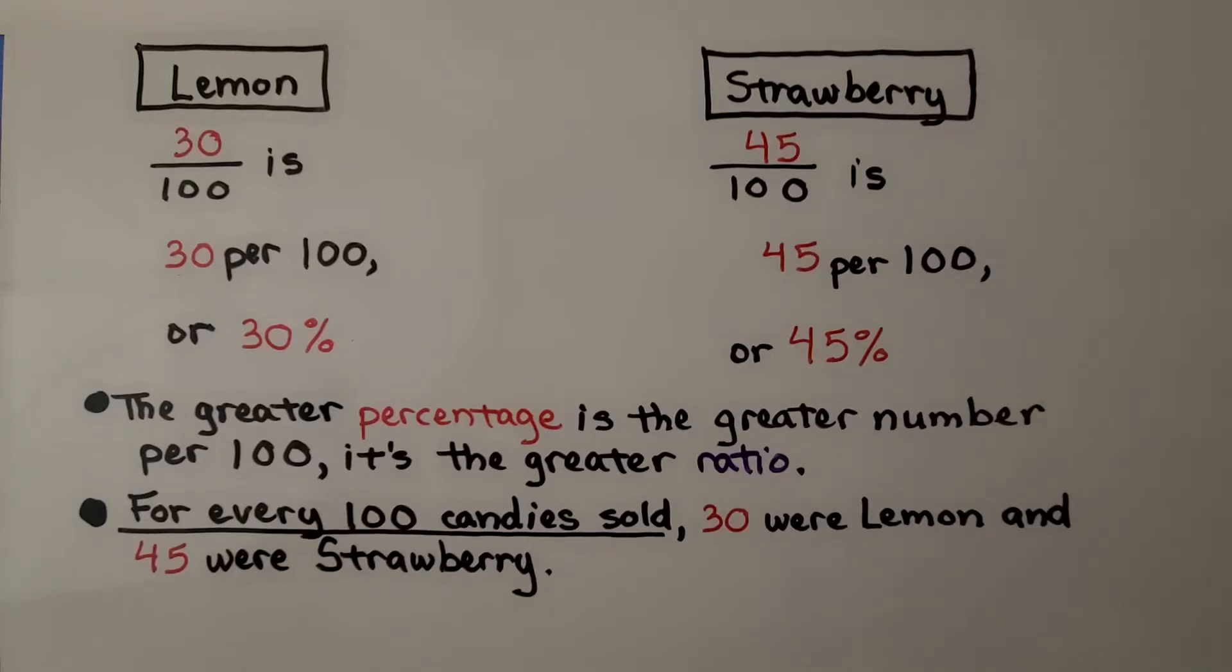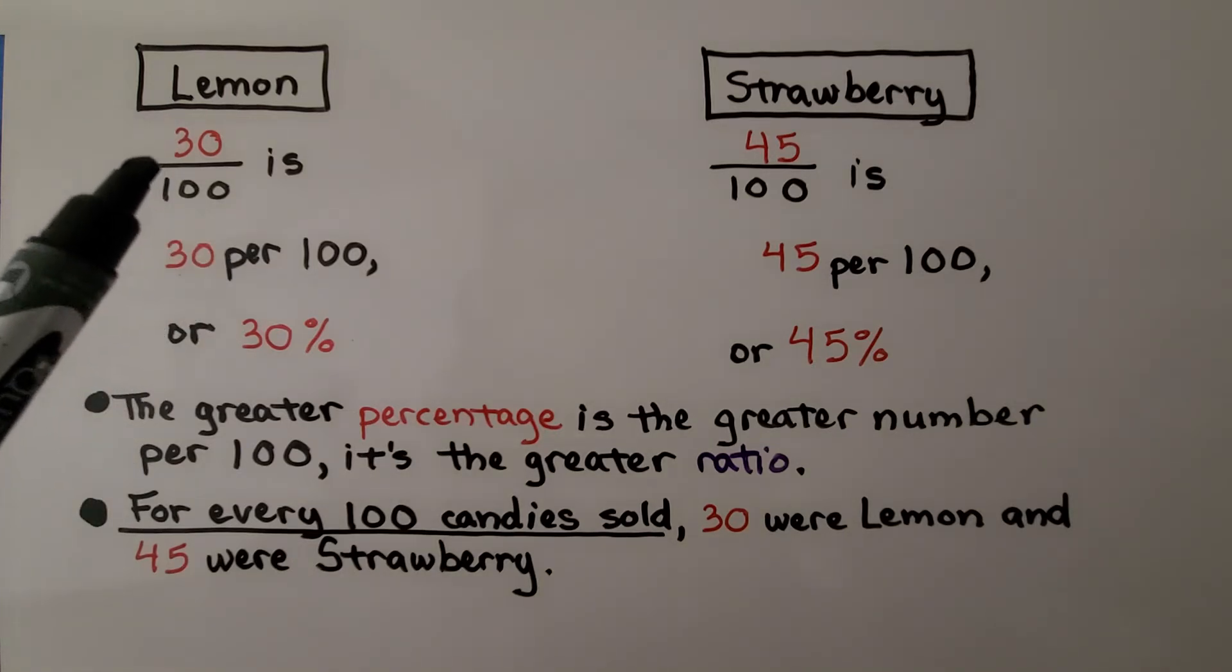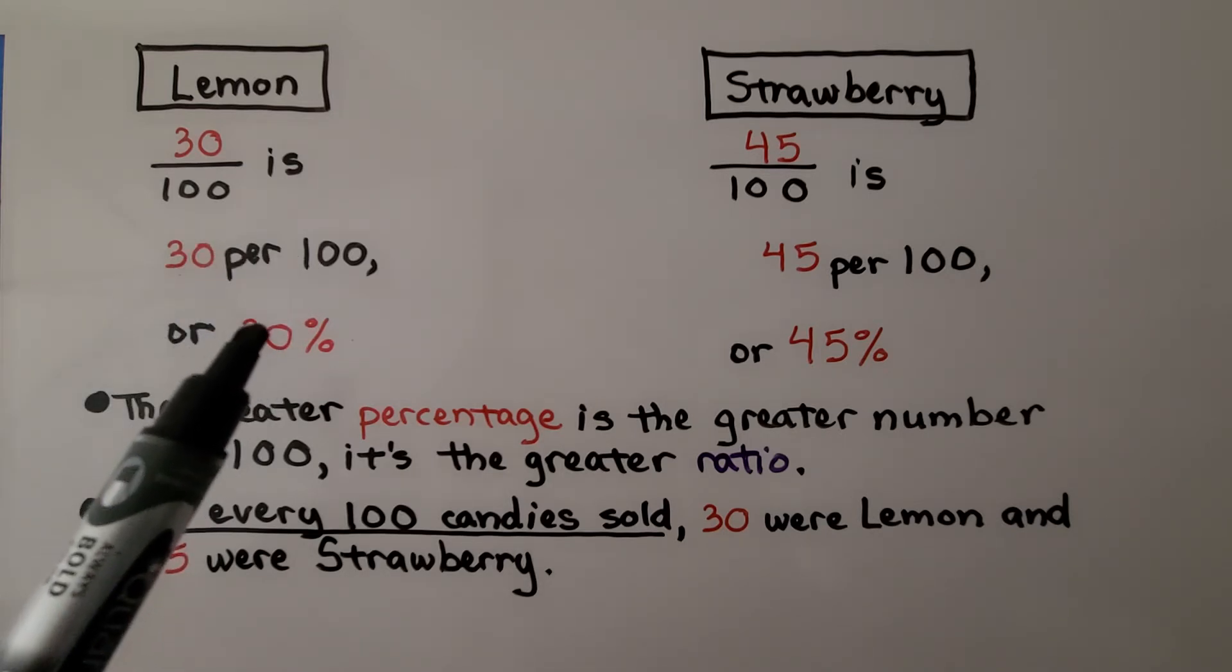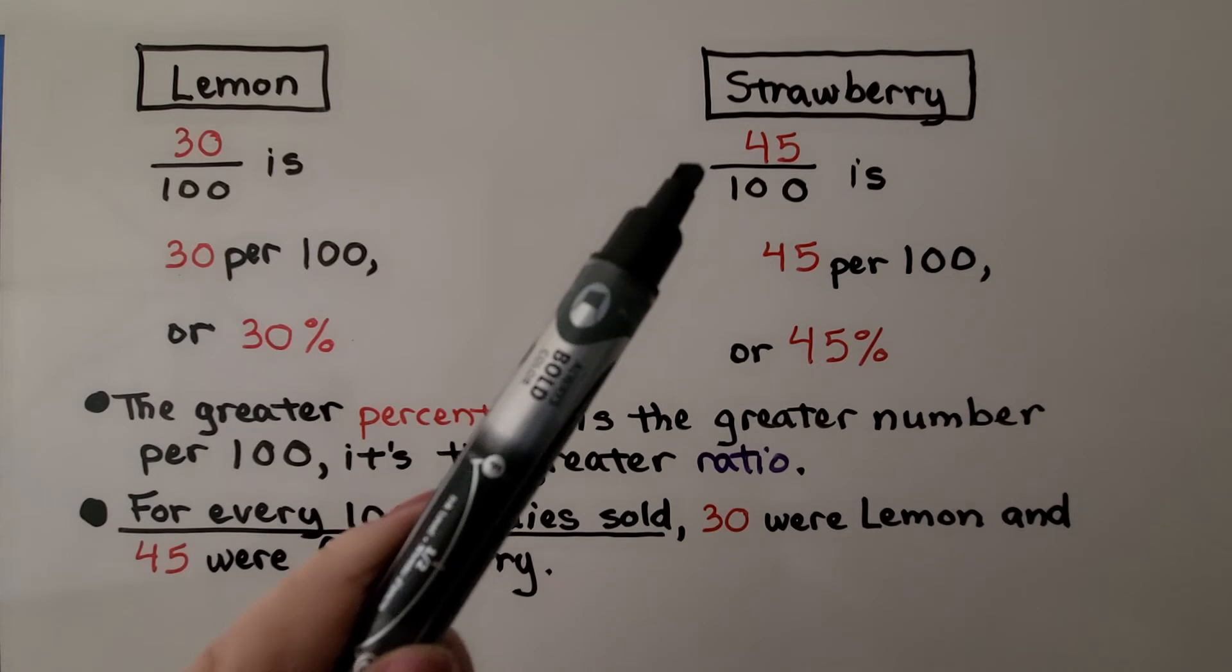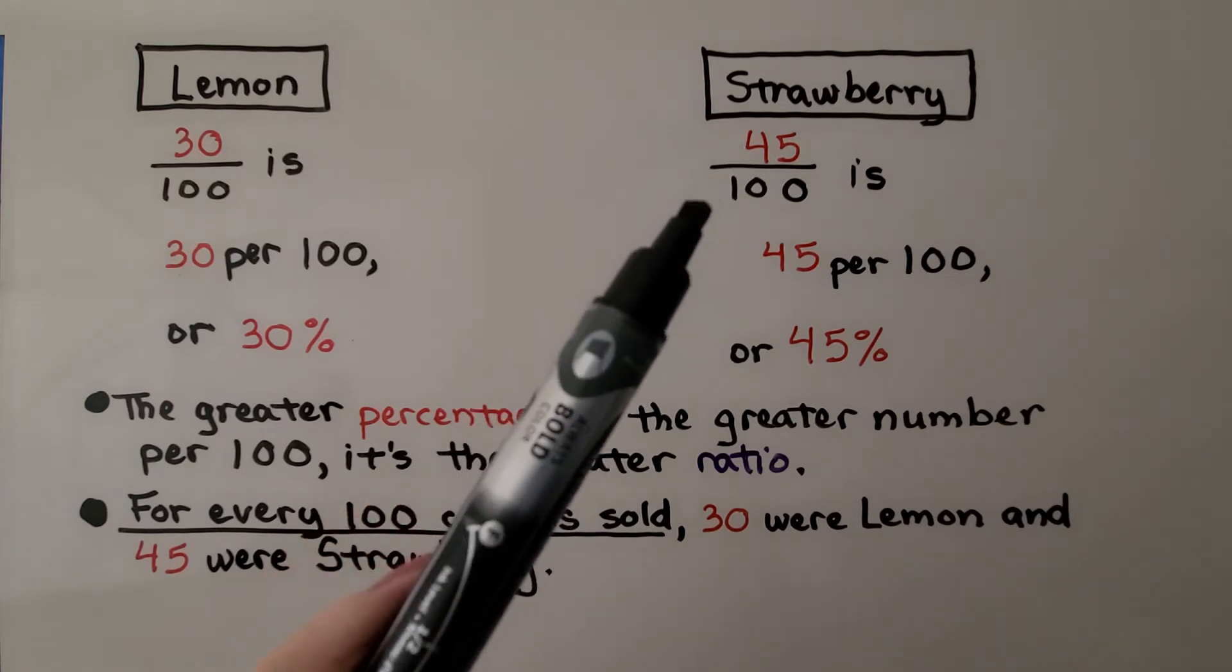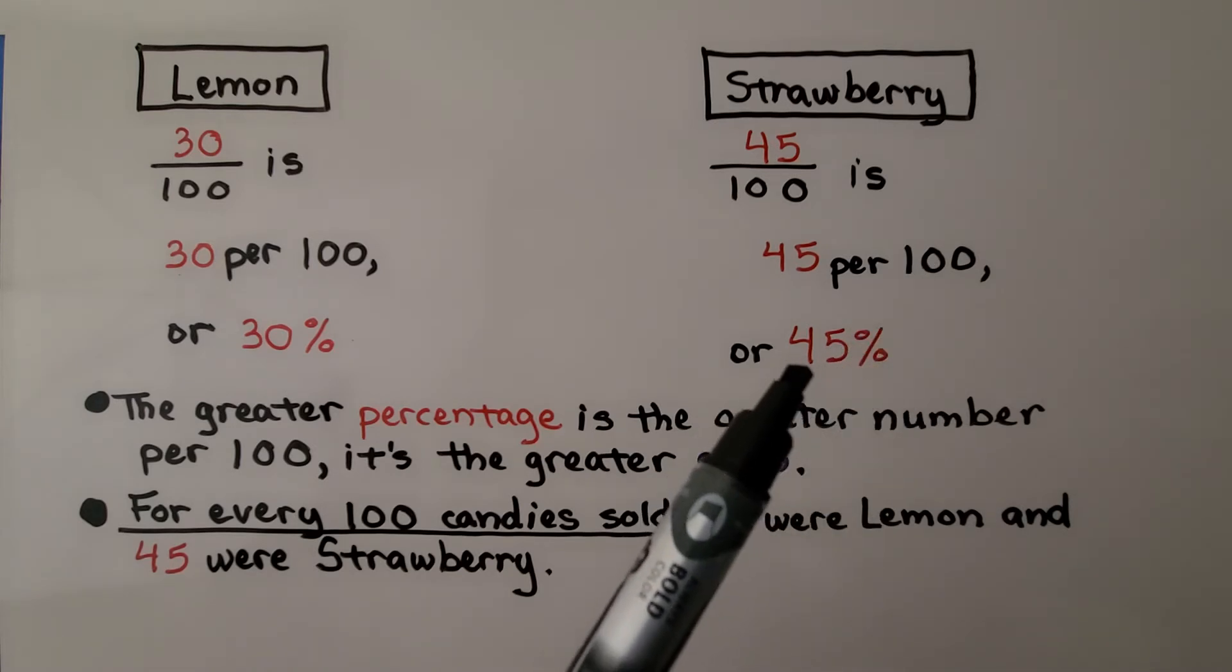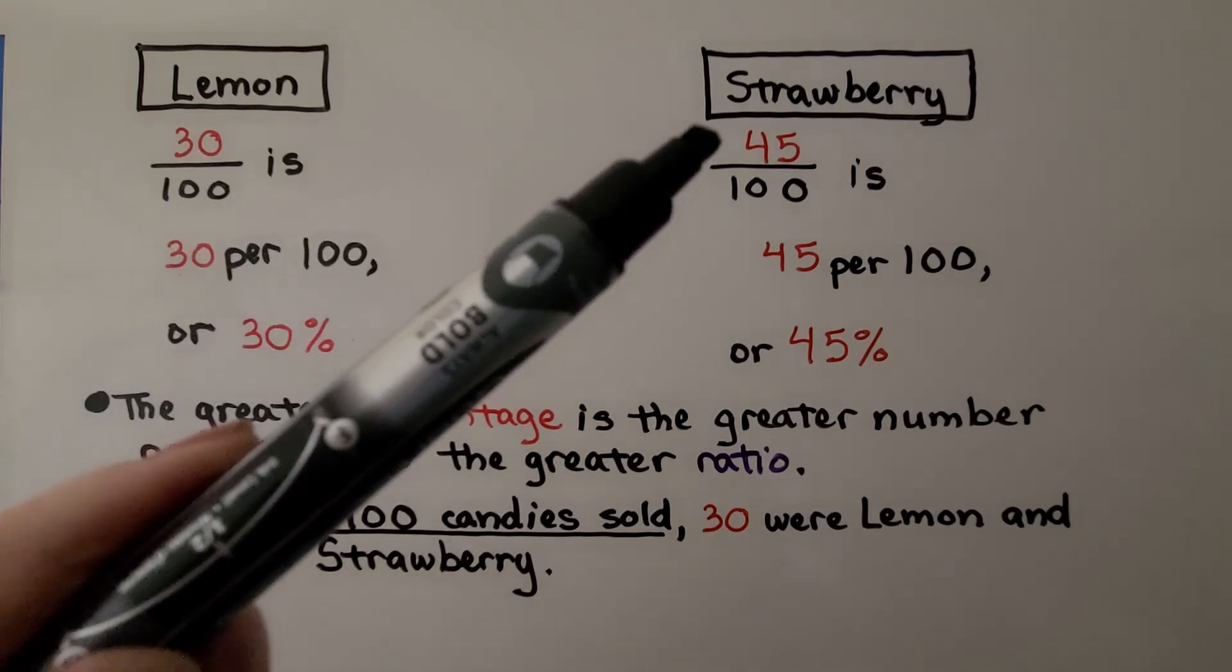For the lemon candies, we shaded 30 out of the 100 units. It was 30 to 100. That's 30 per 100 or 30%. For strawberry, we shaded 45 of the 100 units. That's 45 per 100 or 45%. The greater percentage is the greater number per 100. It's the greater ratio. For every 100 candies sold, 30 were lemon and 45 were strawberry.